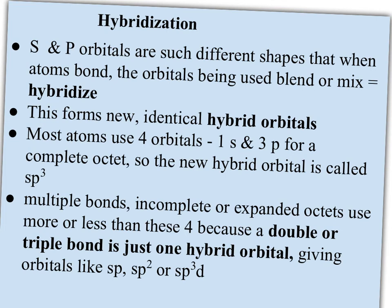So hybridization. This is the idea that S and P orbitals are totally different shapes. Remember the S is this nice spherical shape, and the P is like this double peanut shape around that S orbital. So when atoms bond, the orbitals being used blend or mix, and even if it's two P orbitals that are sharing the electrons, remember how they have to bend over and form that bun shape around the hot dog shape? So we say that the orbitals blend or mix, or that's called hybridization.